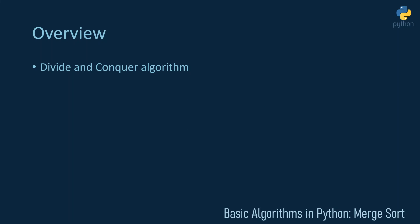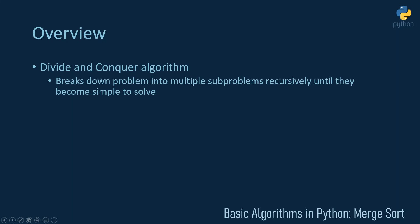Merge sort is a divide and conquer algorithm. In general, this means that a problem is divided into multiple sub-problems, and those sub-problems are then divided by the same algorithm into more sub-problems. This procedure goes on until the sub-problems become very easy to solve, at which point the sub-problems are combined to solve the original problem.